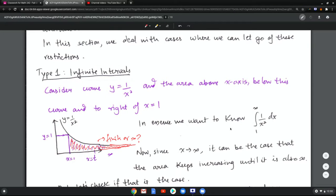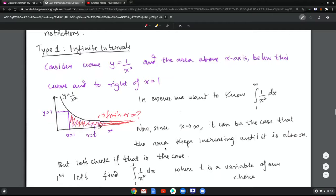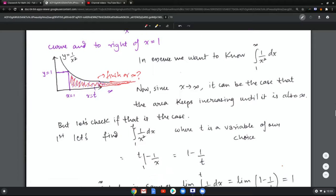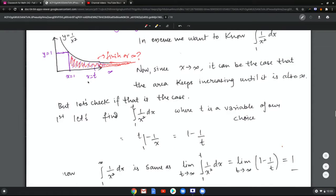As x goes to infinity it can be the case that the area keeps increasing until it is infinity, but it may not, so we have to check. To check that we introduce a dummy variable t. Now we say let's say I decide to stop at some point t, what's the area then? Well then it's 1 to t, 1 over x squared dx, which becomes negative 1 over x, 1 minus 1 over t.